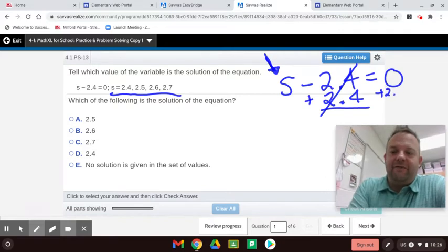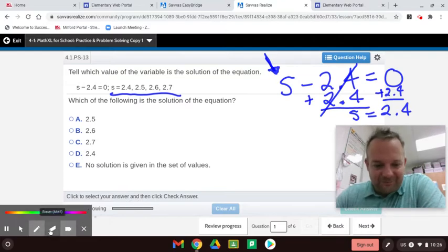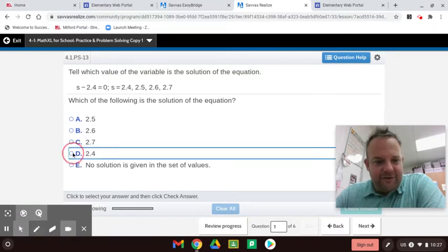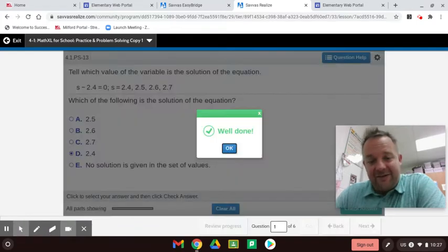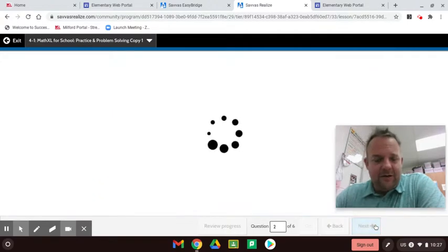Whatever you do on one side, you have to do on the other. So we're going to add 2.4 here. And then S equals, because this cancels out to 0, 2.4. So the answer is 2.4, which I'm sure you already knew. But I want to get to all the concepts on why they're giving you this problem first, because they're showing you an additive inverse, which is what that's called.